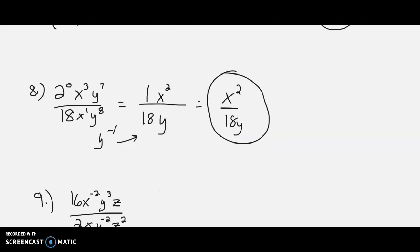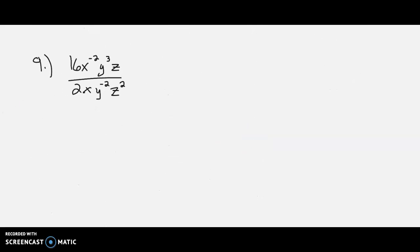One more here to show you. Number 9. 16x to the negative 2, y to the 3rd, z over 2xy to the negative 2, z to the 2nd. Take care of the numbers first, 16 and 2. That becomes an 8. x to the negative 2, x to the 1. Negative 2 minus 1, x to the negative 3.